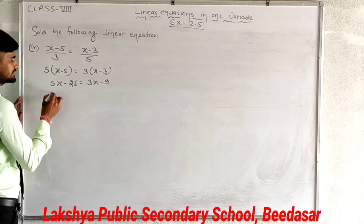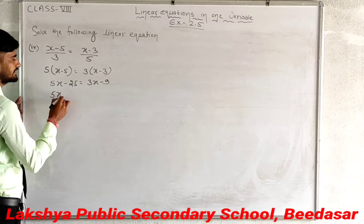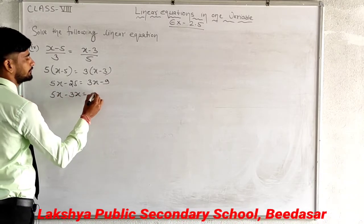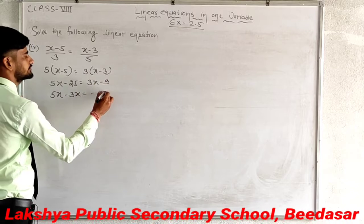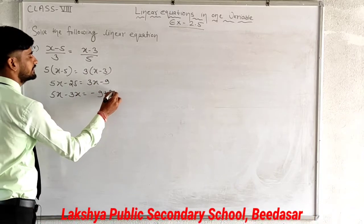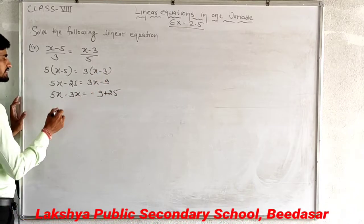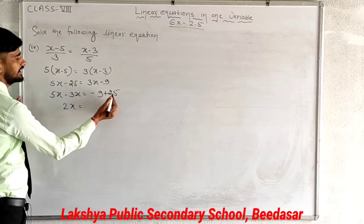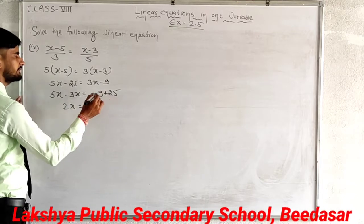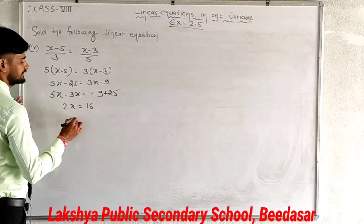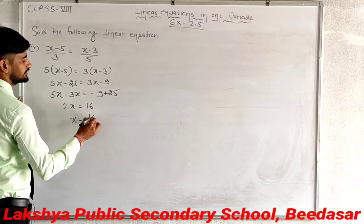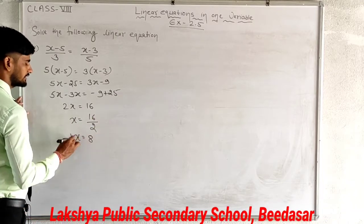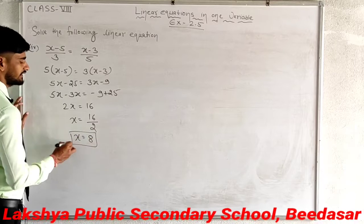Now transpose the variables: 5x minus 3x equals minus 9, and minus 25 becomes positive on transposing. So 5x minus 3x gives 2x, and 25 minus 9 gives 16. Then x equals 16 divided by 2, which is 8. That is your answer.